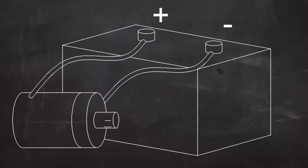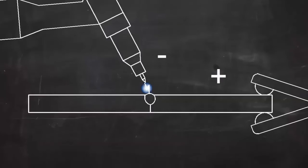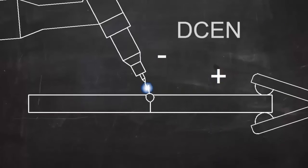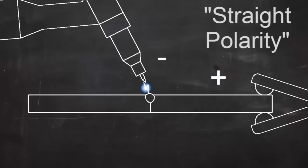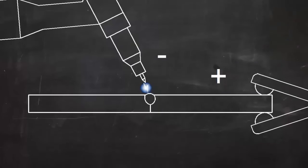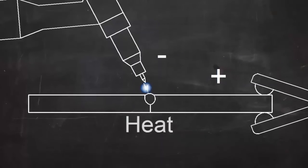DC is like the current flowing from a car battery — one wire is always negative and one is always positive. In DC TIG welding, the electrode is usually negative and the workpiece is positive. The term DC EN is used for this, indicating that the current is DC and the electrode is negative. This is also called straight polarity, but DC EN is a more descriptive term. DC EN puts most of the heat on the workpiece and is the most common setup.